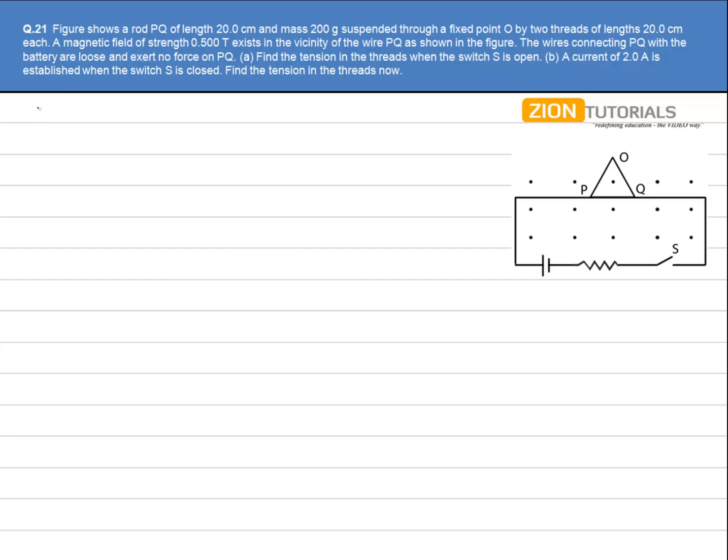In the first case, it's simply the mass that is hanging. So let's say this is my two threads and this is my wire PQ. Then the tension T will be developed in both of them, and of course, PQ and O form an equilateral triangle, so the angle will be 60 degrees.